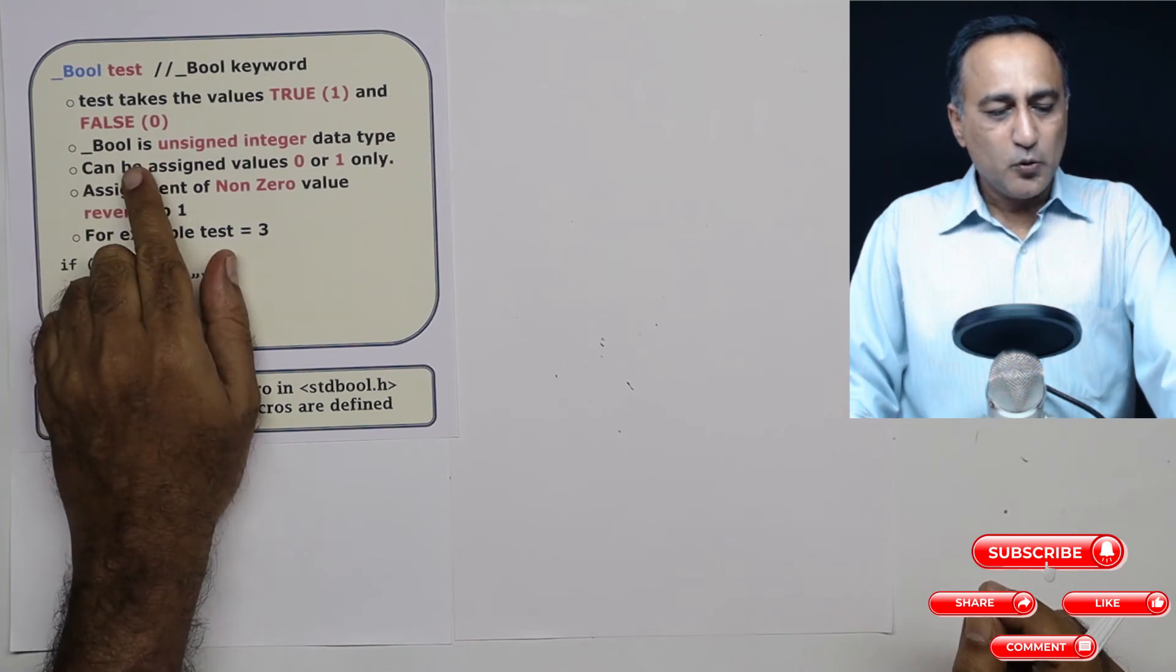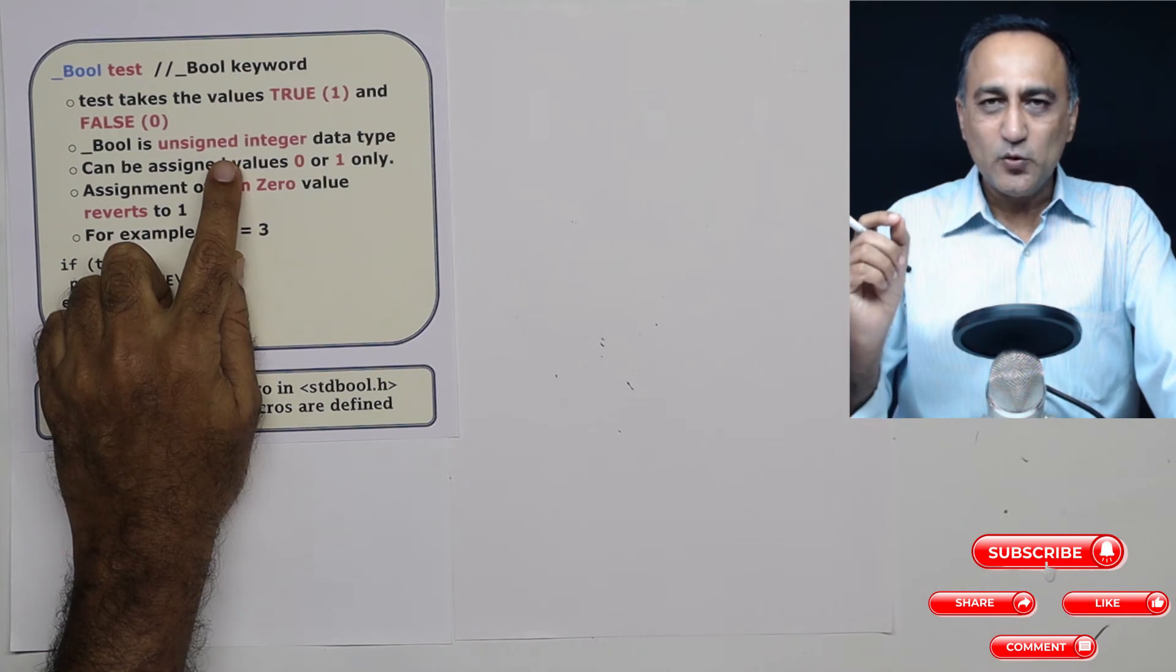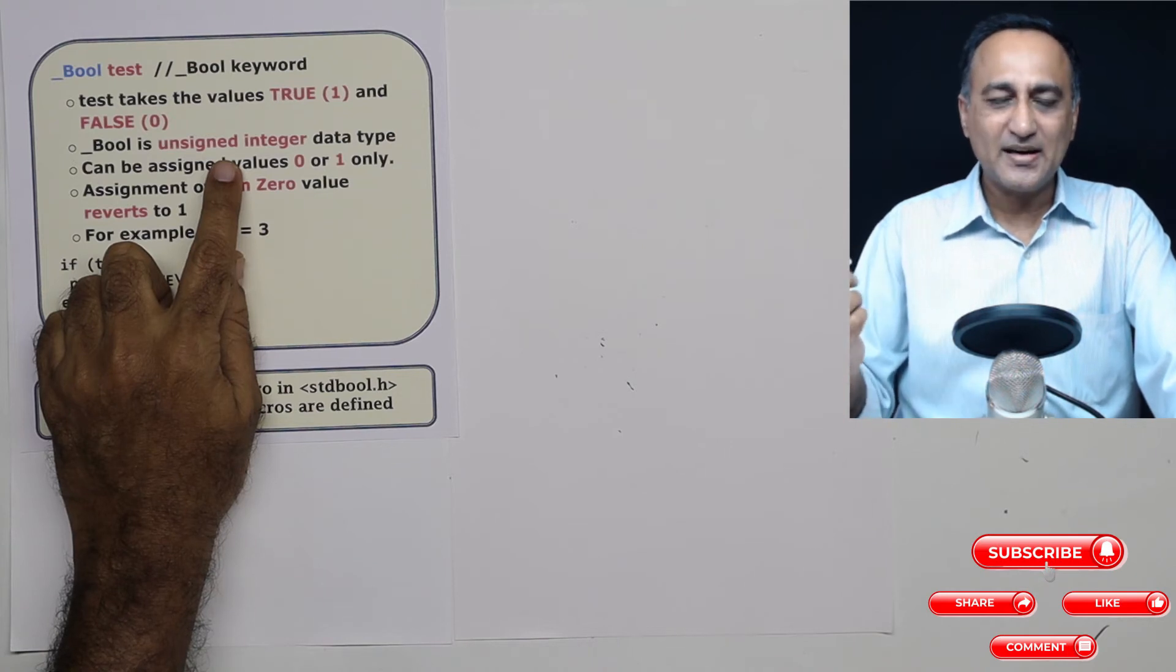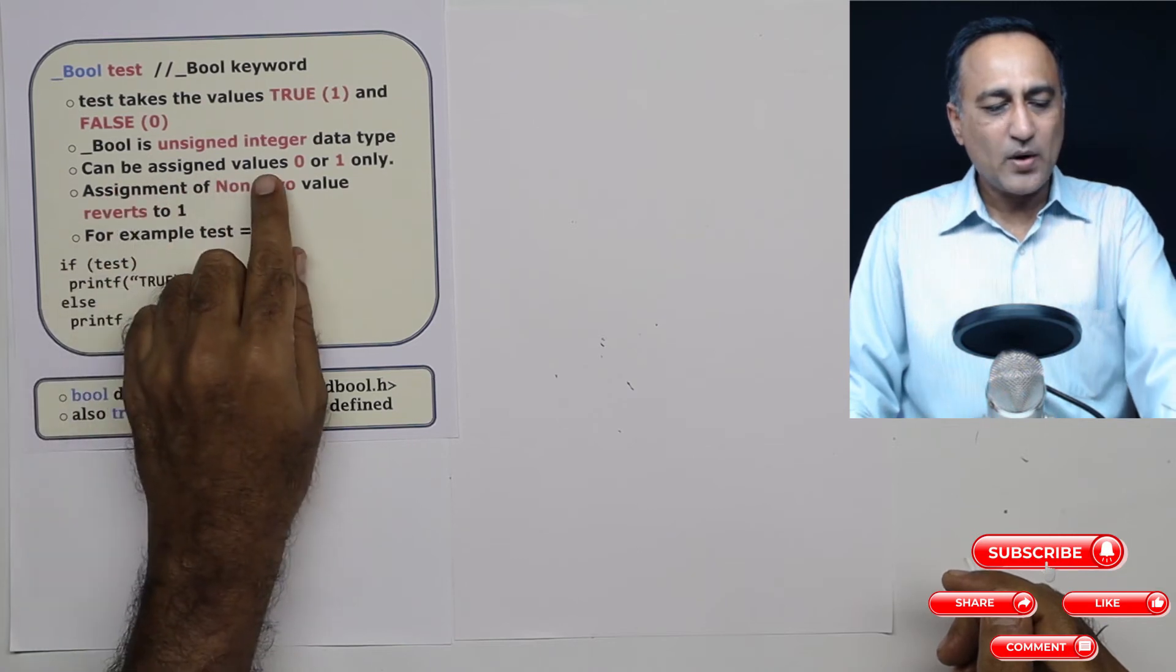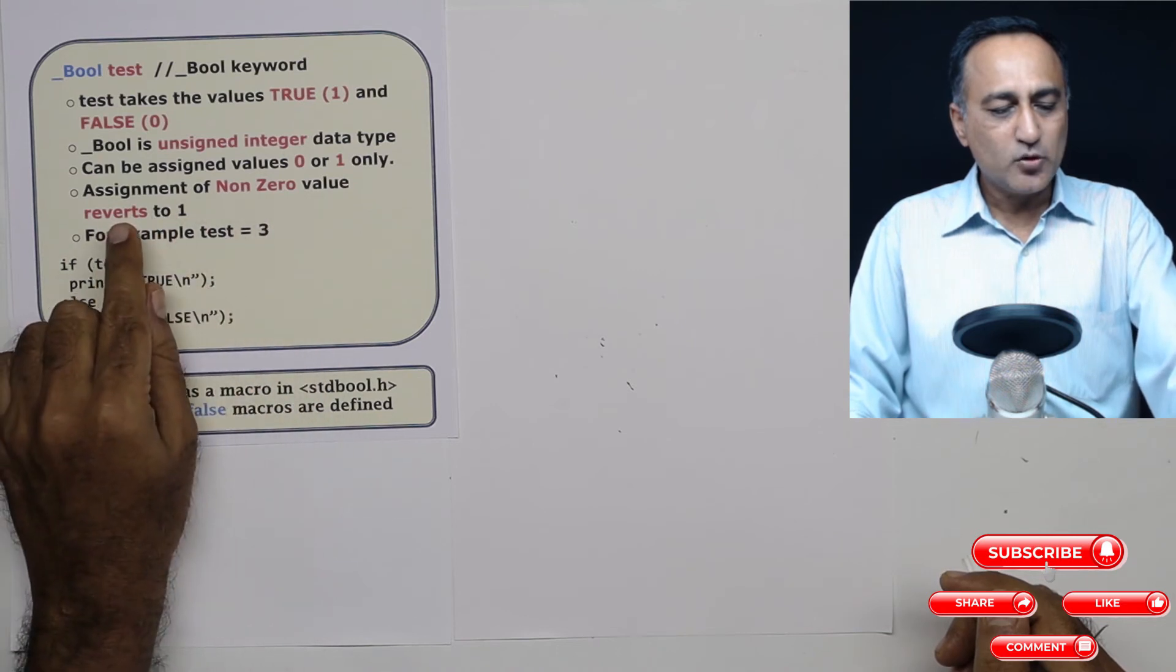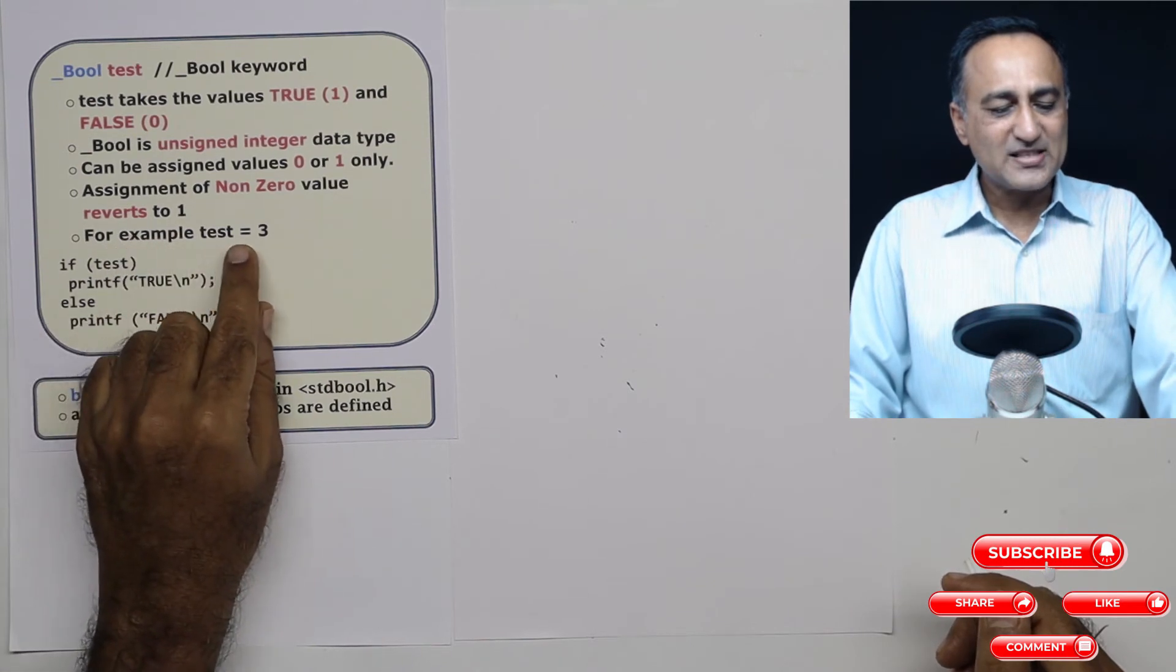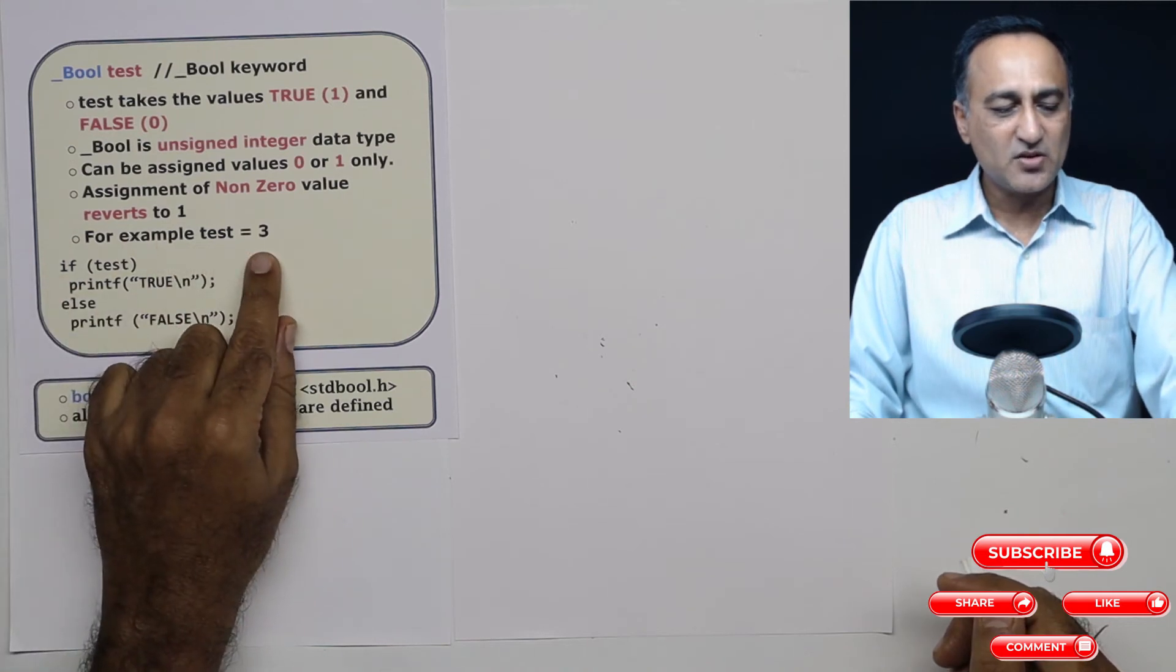So initially, bool data type is an unsigned integer only, that means it can either take the value zero or it has to be a positive number. So even if you assign test a negative number, it will turn out to be taking it as one or positive. So bool can be assigned values only zero and one. If you try to assign a non-zero value to a bool type of variable, it will revert back to one. Let's say for example, I make test equal to three. I should be assigning only one or any positive number, but I'm trying to assign three.